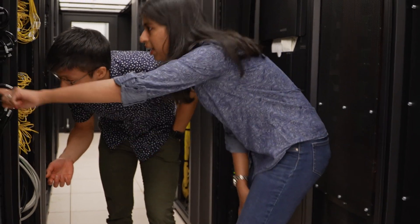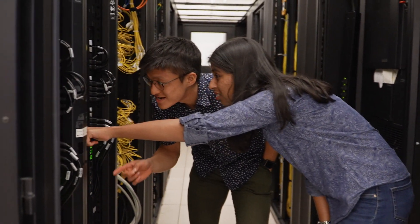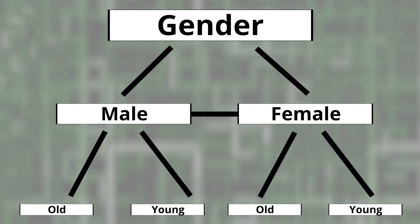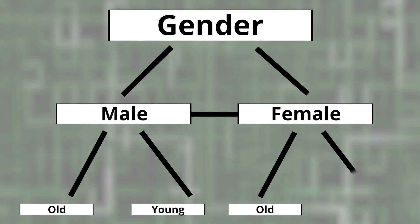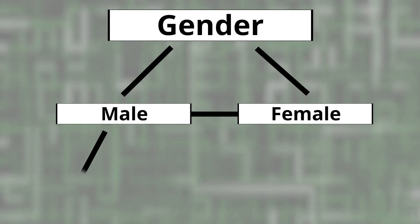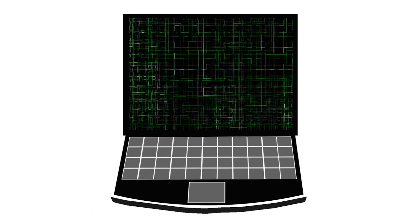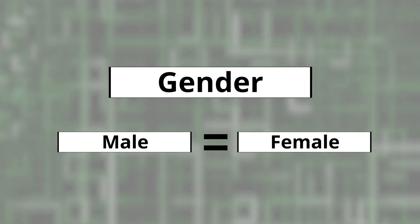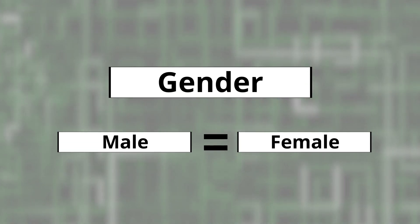If we know that this is the case, then we can build systems that can mitigate these inequities. We can basically roll back those decisions that machine learning models would have made and, based on this data, say that this request is now going to be processed differently — kicking in a new decision that says everyone needs to be treated equitably.